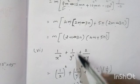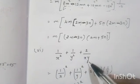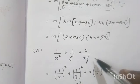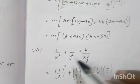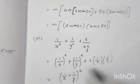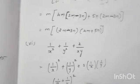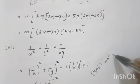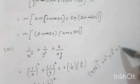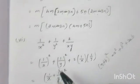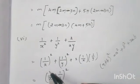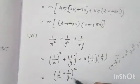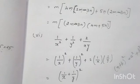Sixth problem: 1/x square plus 1/y square plus 2/xy. This is rewritten as (1/x) whole square plus (1/y) whole square plus 2 times (1/x) times (1/y). It is in the form a square plus b square plus 2ab, which equals (a plus b) whole square. Here a is 1/x and b is 1/y, so the factorized form is (1/x plus 1/y) whole square.